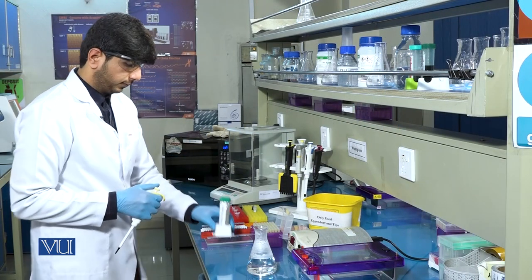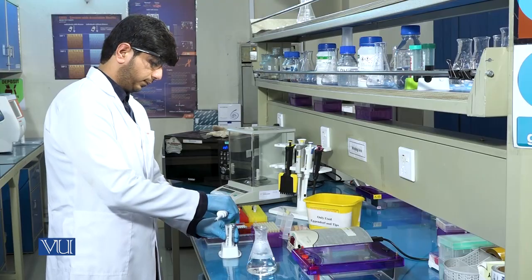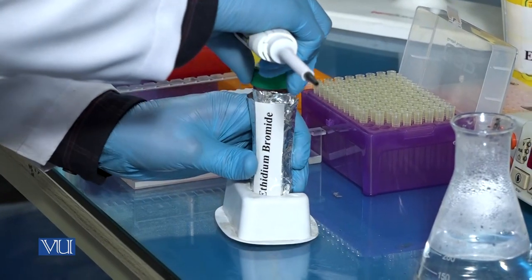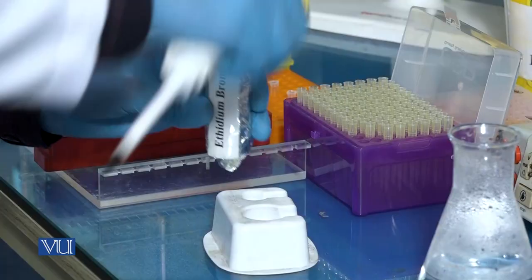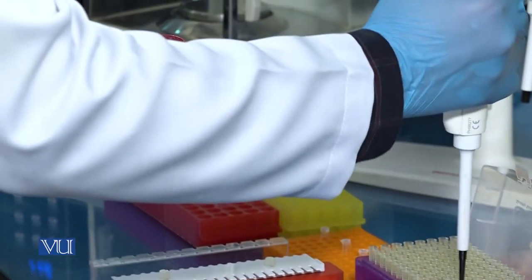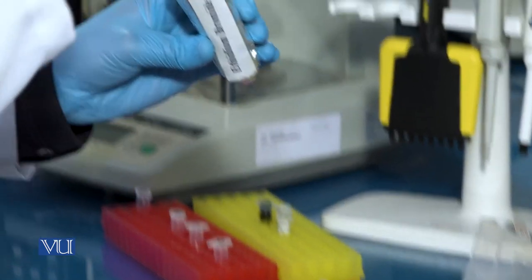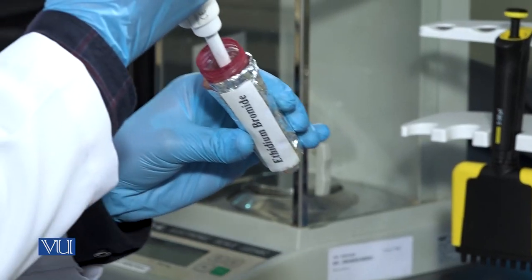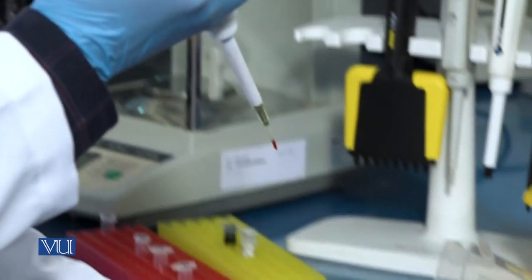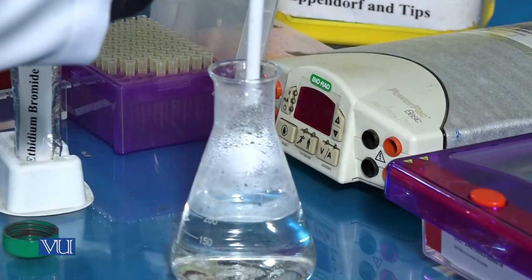Now add 7 to 8 microlitre ethidium bromide into the gel flask. It must be noted that ethidium bromide should be handled carefully because it is carcinogenic dye.